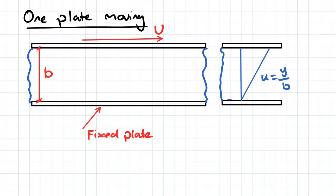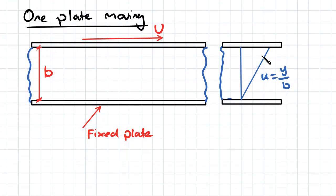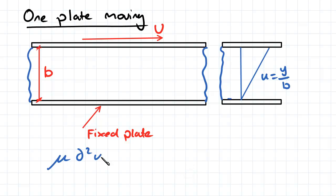In the last video we looked at steady flow between plates but both plates were stationary. Now we want to have a look at flow where we've got one of our plates moving and one steady. Using the Navier-Stokes equation we're going to come to the same equation initially, in terms of the viscosity and the partial derivative of our velocity u in the y direction equal to 0.